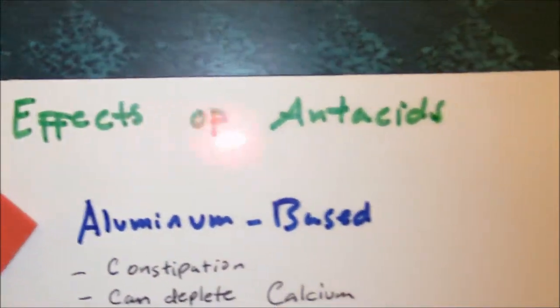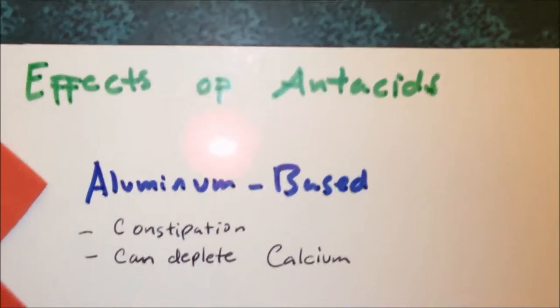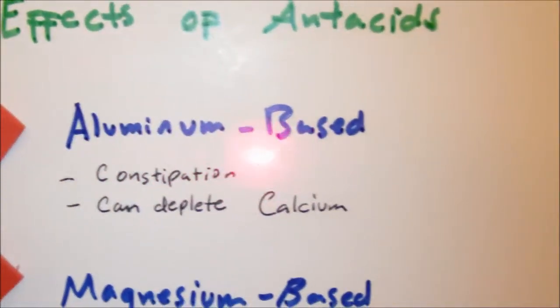Now let's look at the effects of antacids to our patient. With antacids, we basically have them in three groups, three basic forms, which are aluminum, magnesium, and calcium-based.